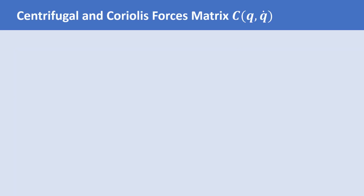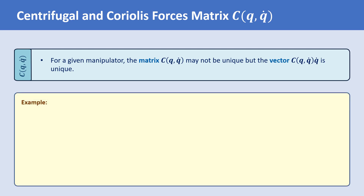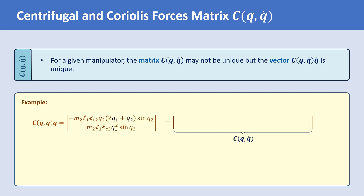Let's now discuss the properties of the centrifugal and Coriolis forces matrix C. The first property of C is that for a given manipulator, the matrix C may not be unique, but the vector CQ̇ is unique. For example, in the dynamic model obtained for a 2-degree-of-freedom planar robot in the dynamics of robotic manipulators lecture, the vector CQ̇ takes a specific form. We want to write this vector as a product of a matrix C, which is a function of Q and Q̇, and the vector Q̇.